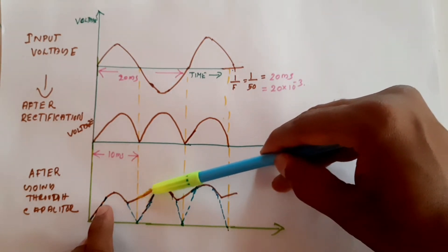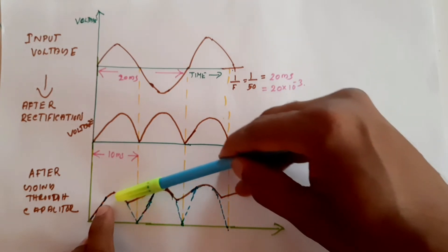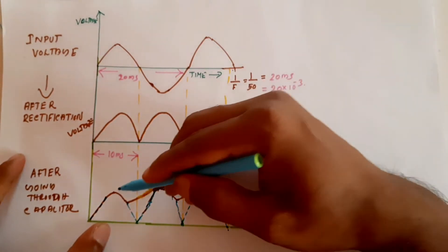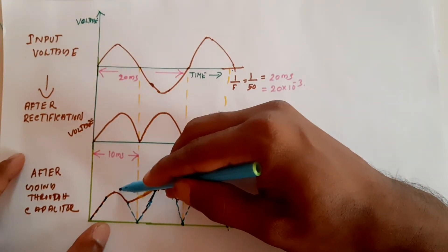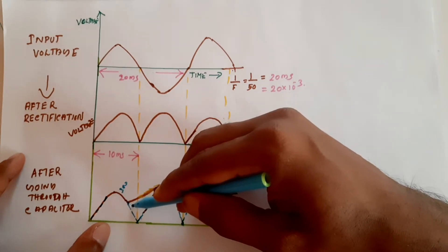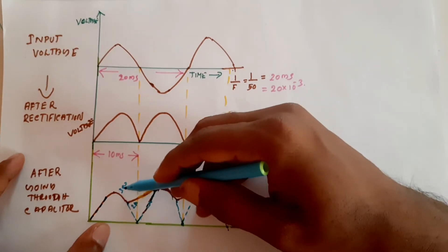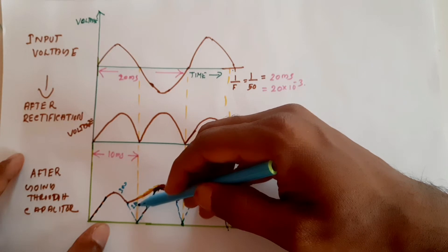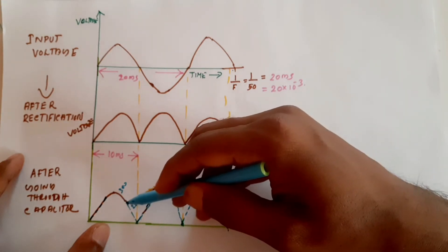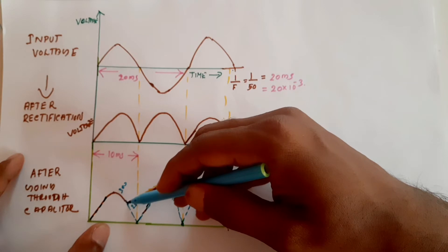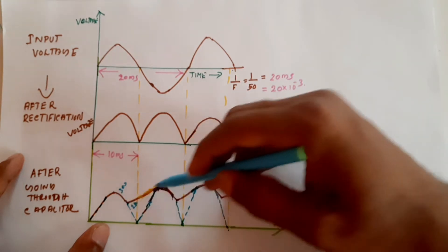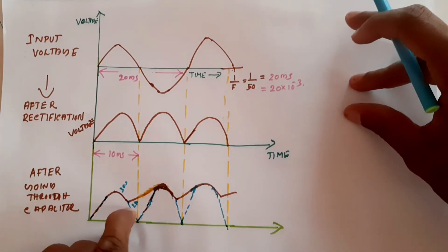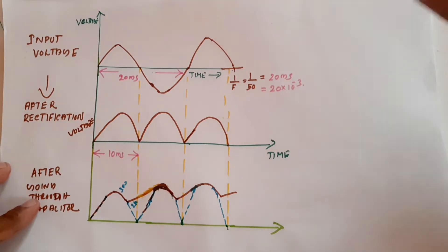The capacitor maintains a minimum voltage. For example, if the peak is around 300 volts, the minimum voltage will be maintained at around 280 volts. This is the use of the capacitor — to maintain a minimum voltage at the output.